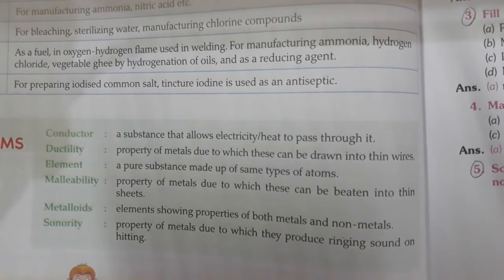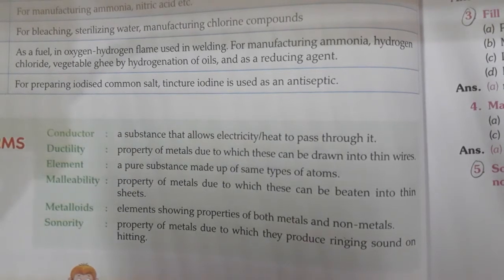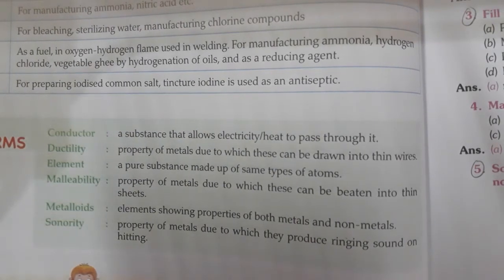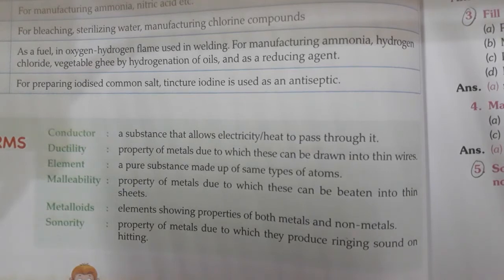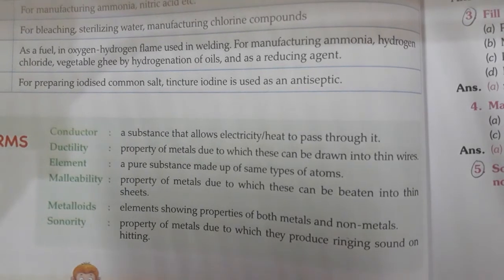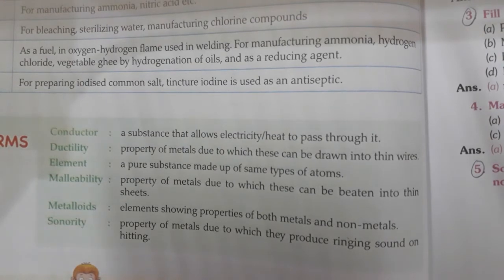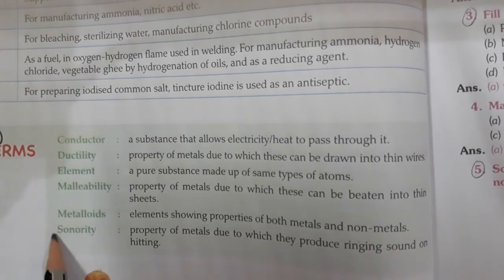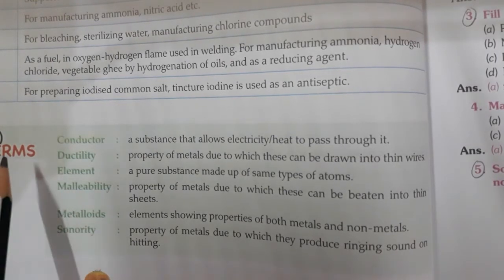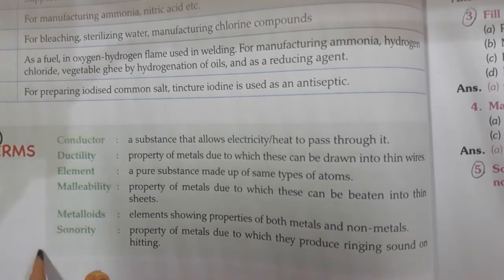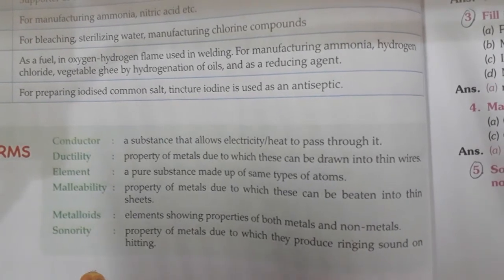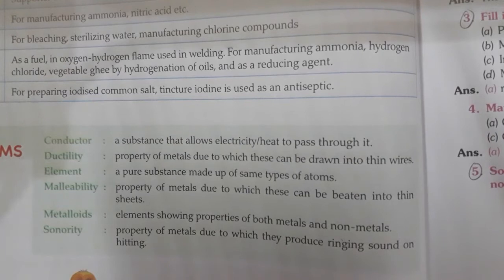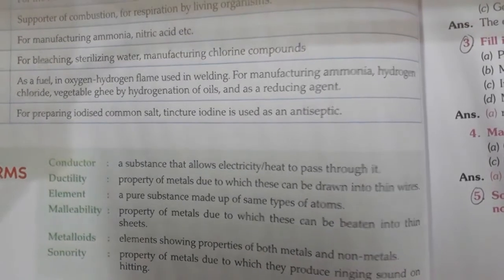Good morning students. This is Class 8 Science, Chapter 4: Materials — Metals and Non-Metals. We have completed the physical properties of metals and non-metals. From that you have learned some key terms, so your work is to learn these key terms. I will make you understand these key terms one more time, as we have already discussed this in the chapter.